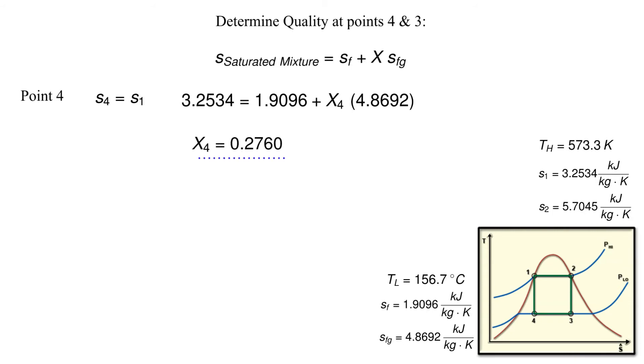The entropy at point 2 is the same as the entropy at point 3. Repeating the process, we solve for the quality at point 3. The quality at point 3 is 0.7794.